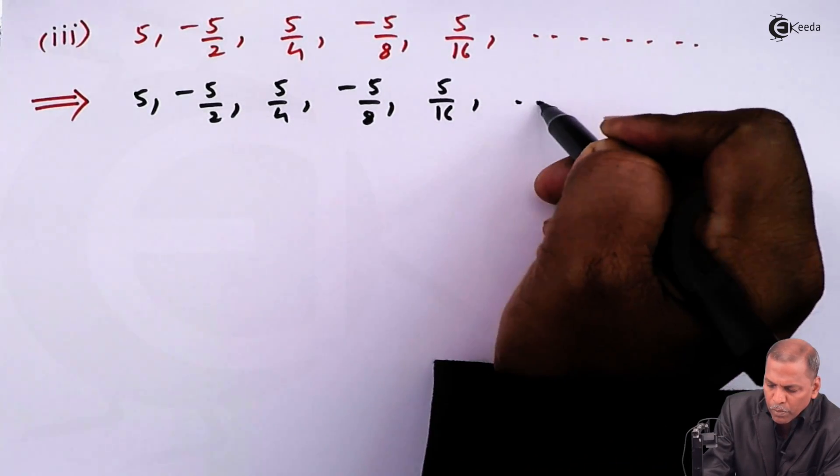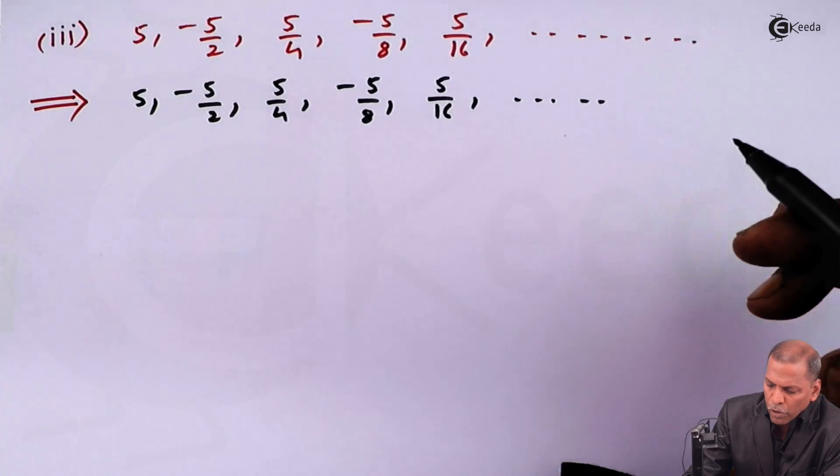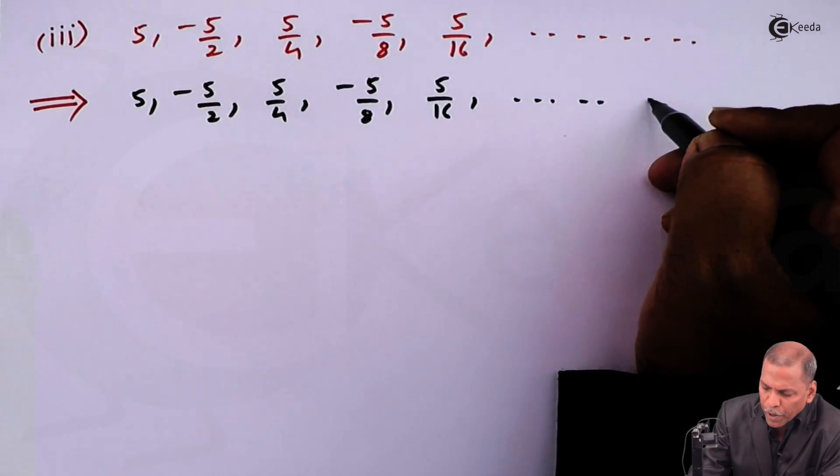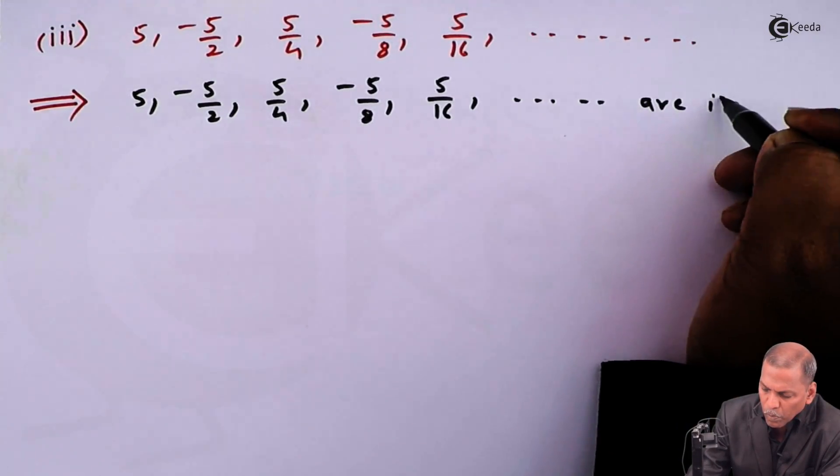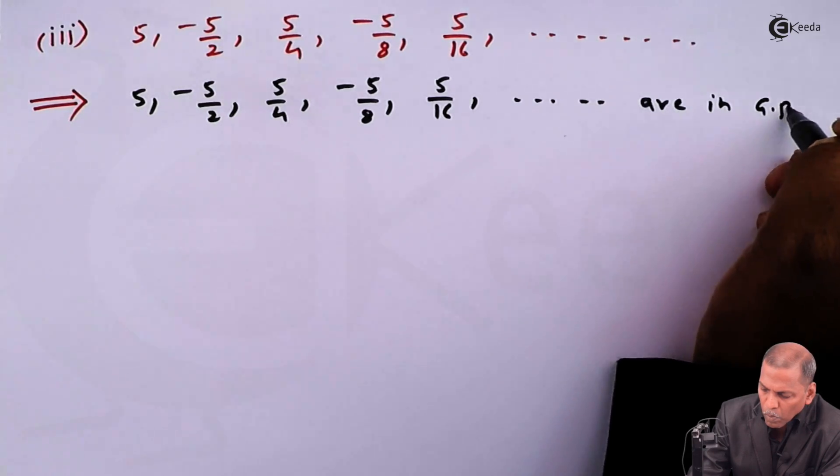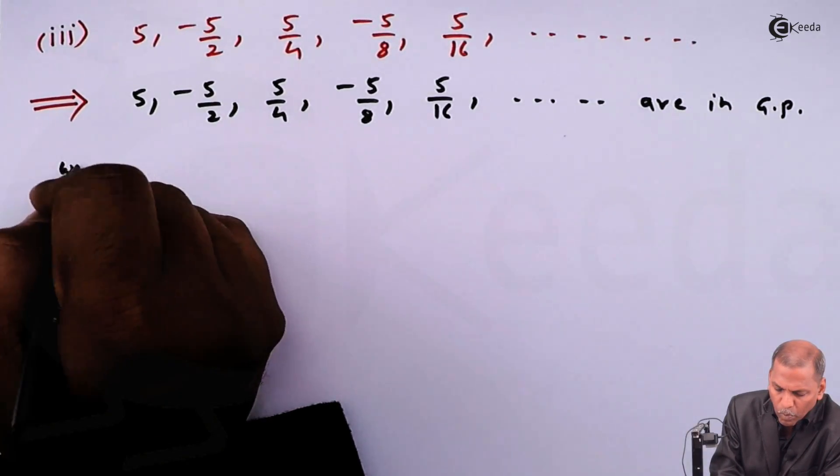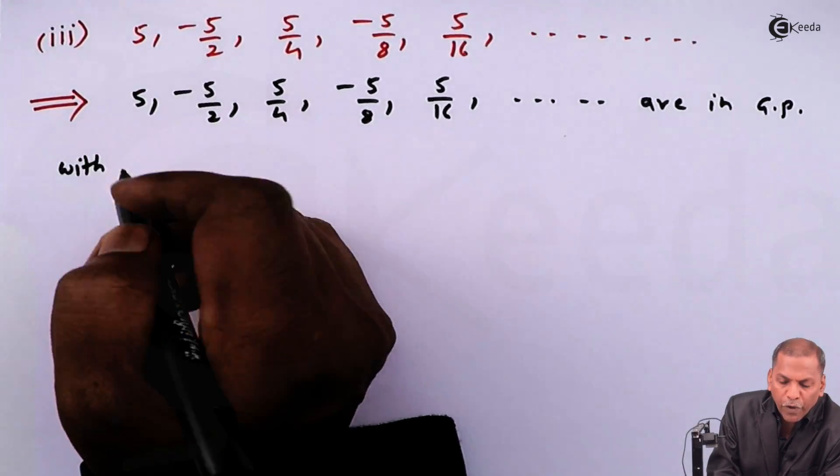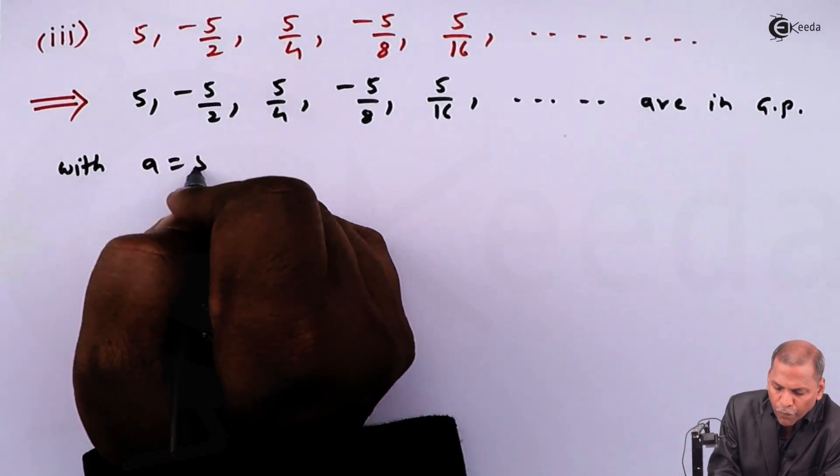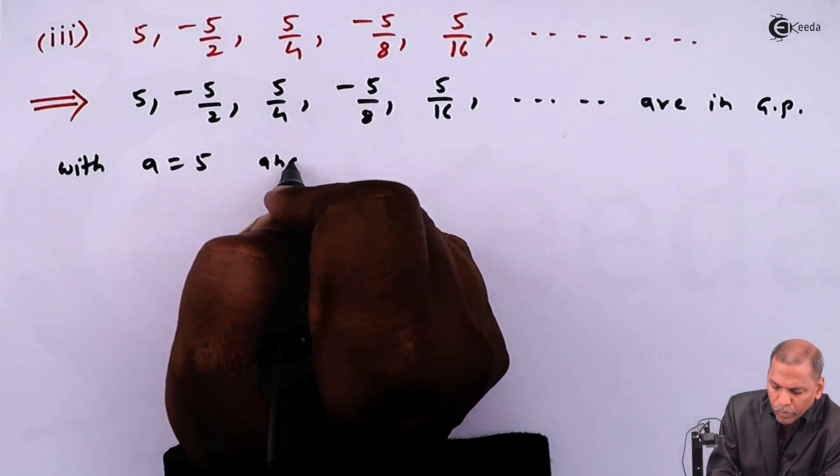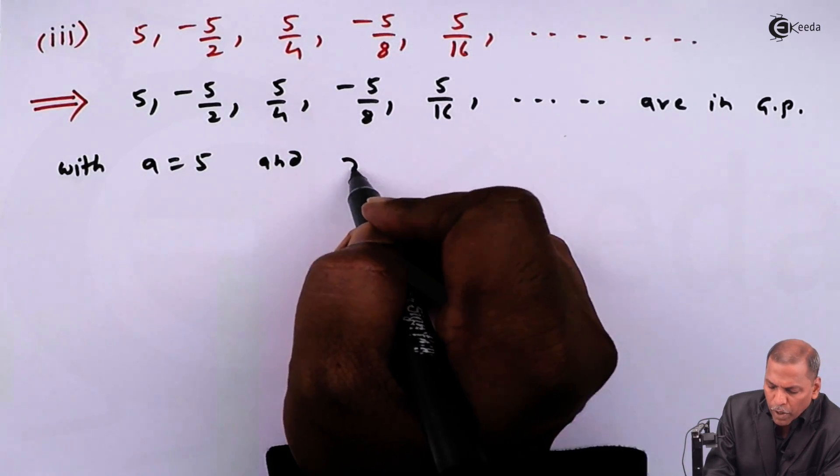-5/8, 5/16, going on, are in GP with first term a = 5 and common ratio r equal